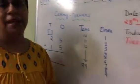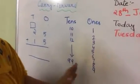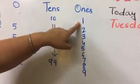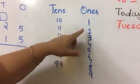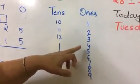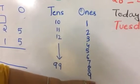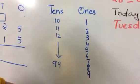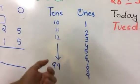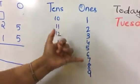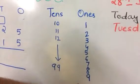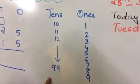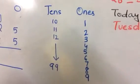Lekin addition mein yeh kaisa hota hai? Chalo check karte hain. Humne tens and ones kiya — ek tens ki row hoti hai, ek ones ki line hoti hai. Toh hamare paas ones mein kya hota hai? One, two, three, four, five, six, seven, eight, nine — nine numbers tak hi hum yahan likh sakti hain. Agar two plus three five karte hain, one plus four five, four plus five nine — jab tak answer nine tak aata hai, hum isi side mein likh sakti hain. Lekin jab humara answer aayega ten — five plus five ten, three plus seven ten, eight plus nine seventeen — toh jab hamare paas nine se zyada answer aa gaya, toh humko tens ki line mein usko pass karna padega.